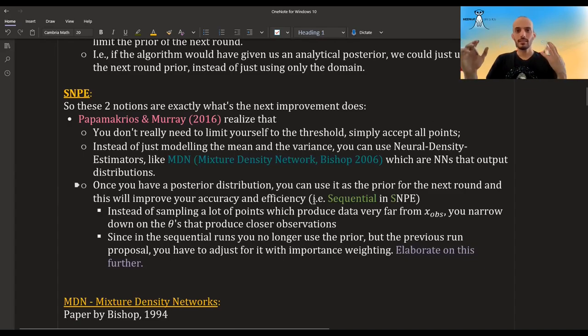So these two notions are exactly what Papamakarios and Murray in 2016 realize: that you first, you don't need to limit yourself to a threshold, just accept all points. So if you don't need a threshold, you also don't need a distance measure. You can just throw these two ad-hoc decisions. And instead of using this one neural network for the mean and another neural network for the variance, you could use something called neural density estimators.